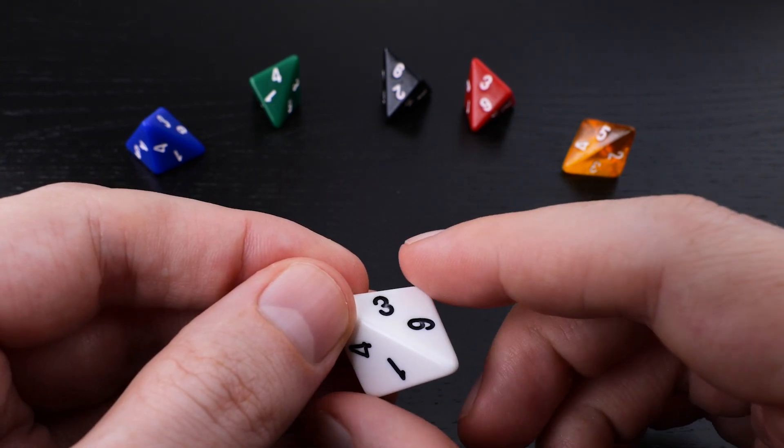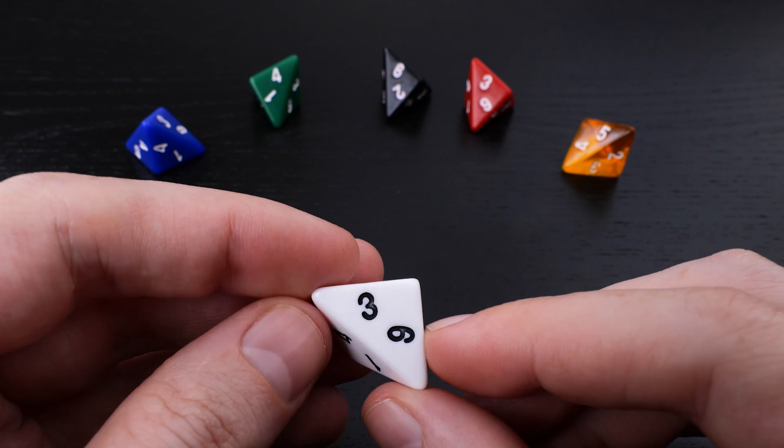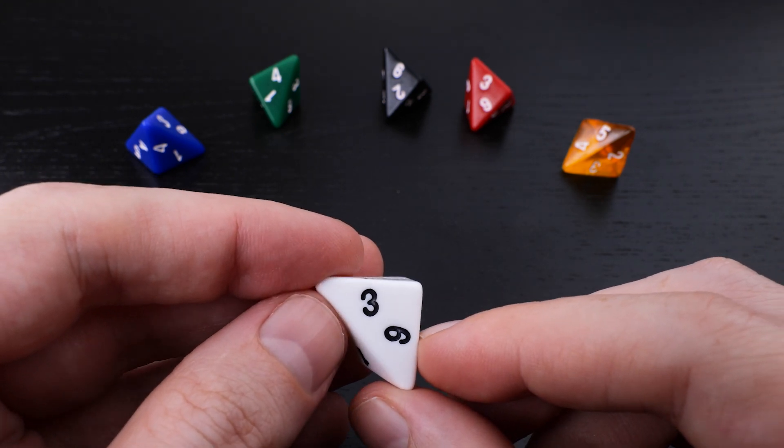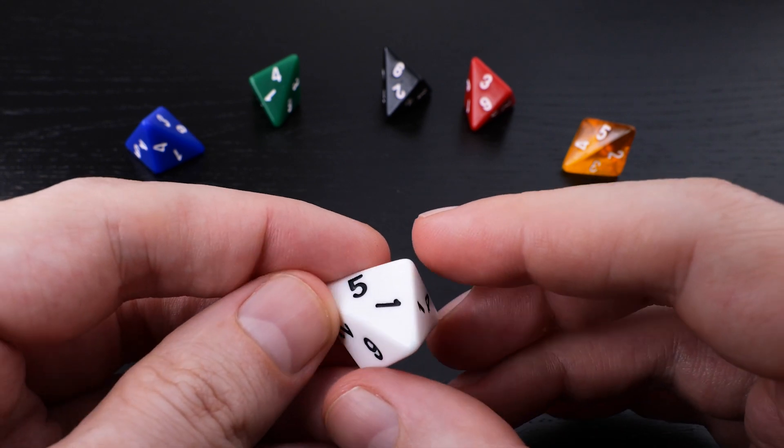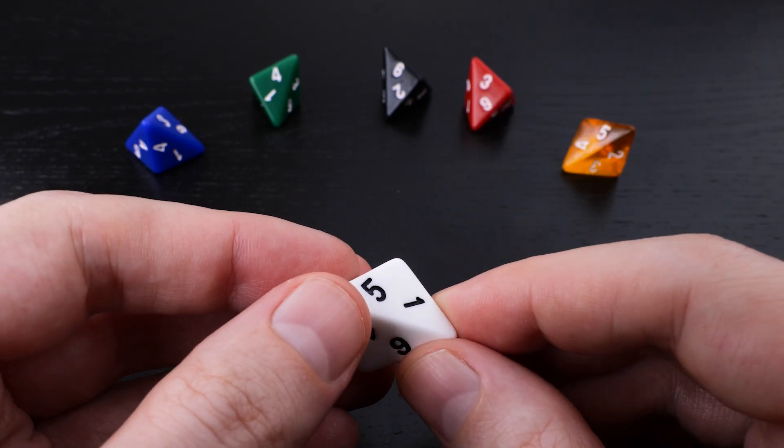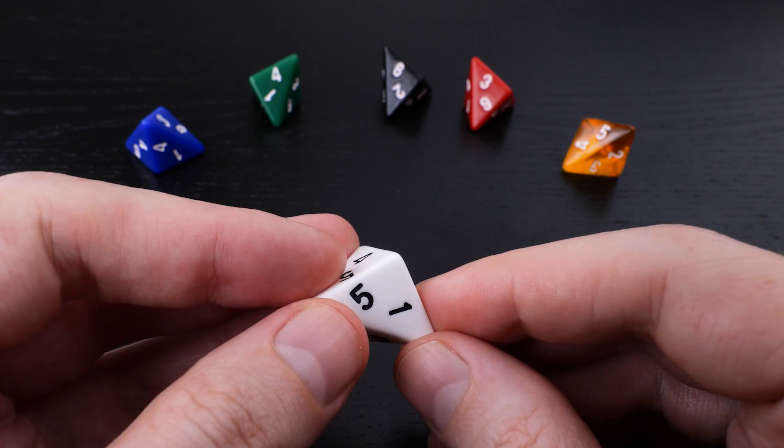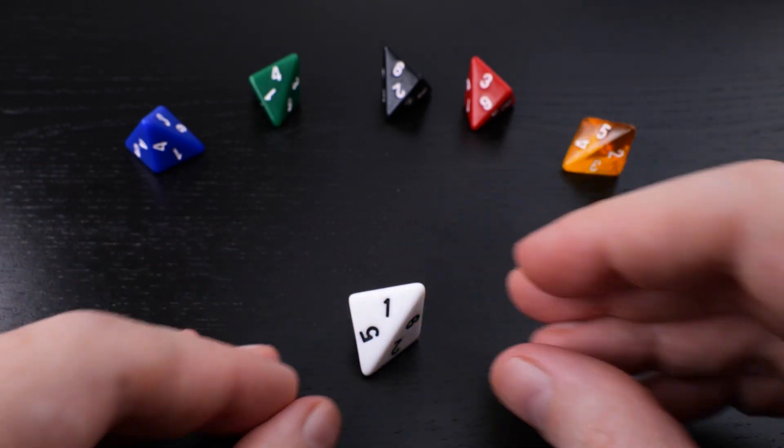You can imagine sort of stretching the die this way to turn these right angle triangles into equilateral triangles. We tested a few different 3D printed prototypes with different stretch amounts to determine the triangle shape that we thought rolled and sat the best on the table for use as a die.